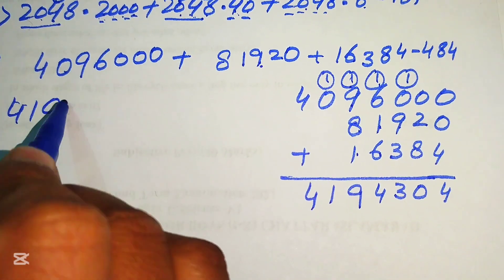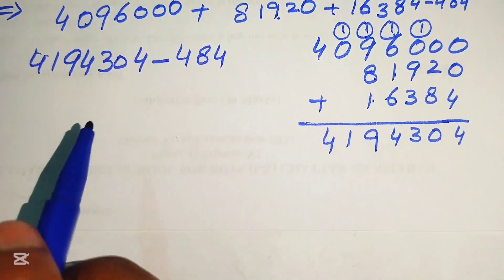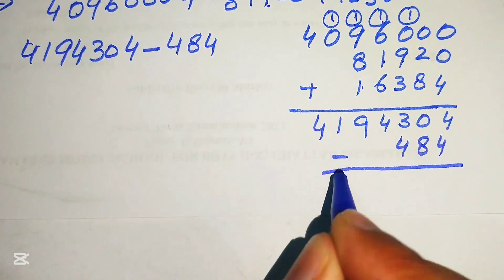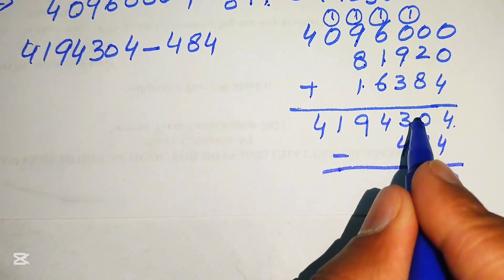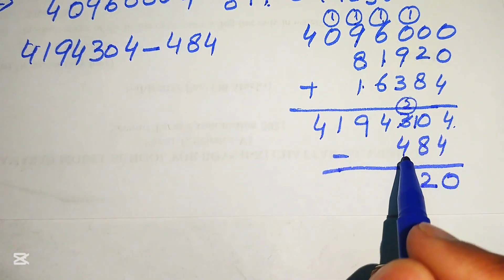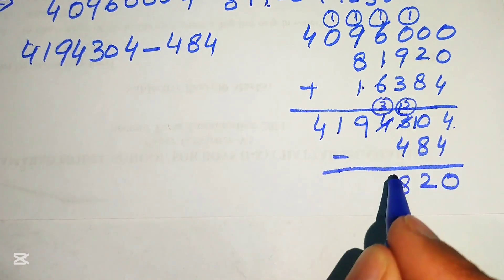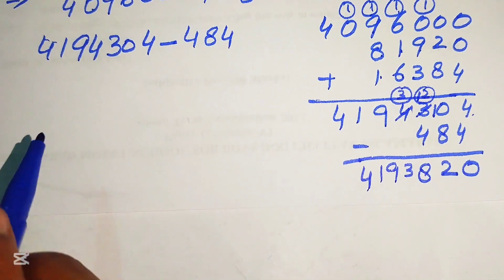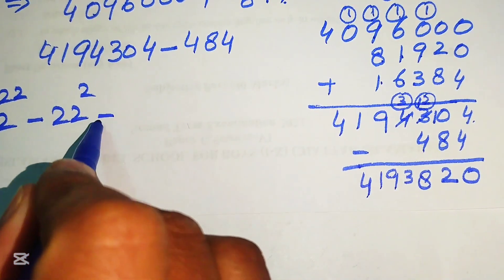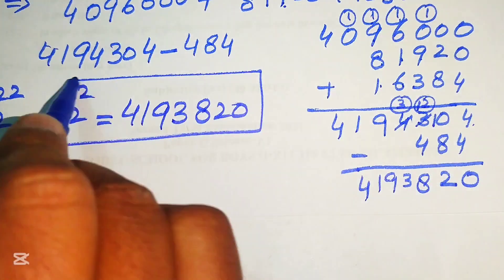We now subtract 484 from 4,194,304. 4−4=0; 10−8=2 (borrowing); 12−4=8 (borrowing); then 3, 9, 1, 4 remain unchanged. So finally, 2 to the power of 22 minus 22 to the power of 2 equals 4,193,820. This is the final answer.